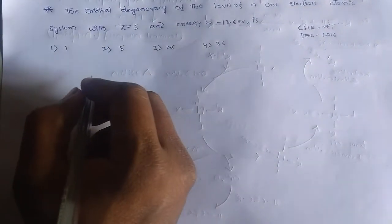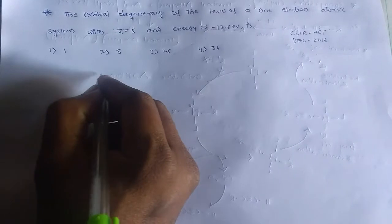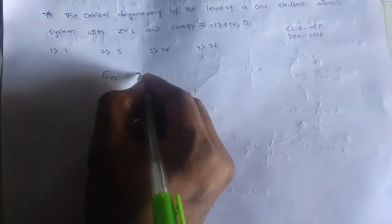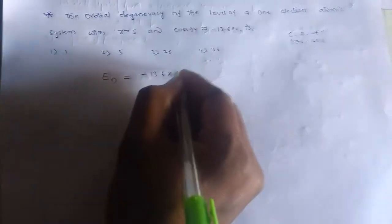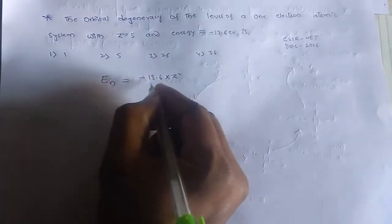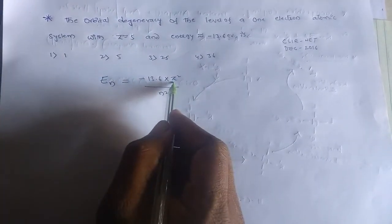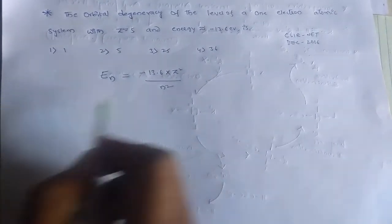So for hydrogen atom and hydrogen-like atoms, we have energy of n, En equals minus 13.6 times Z squared by n squared. Here, Z is the atomic number and n is the principal quantum number. So this is the formula we have.